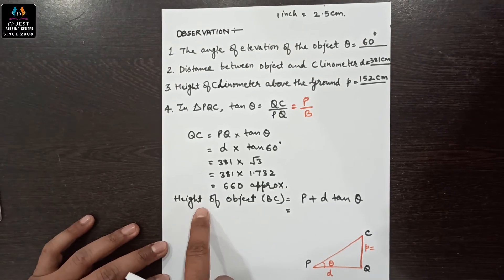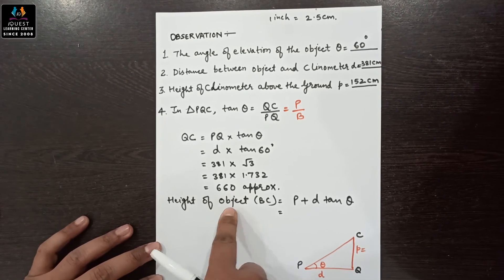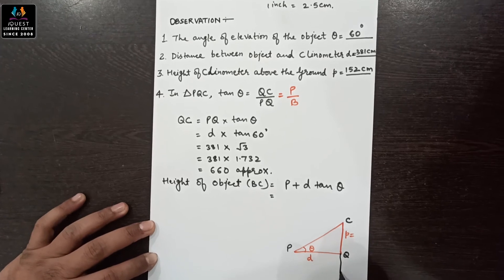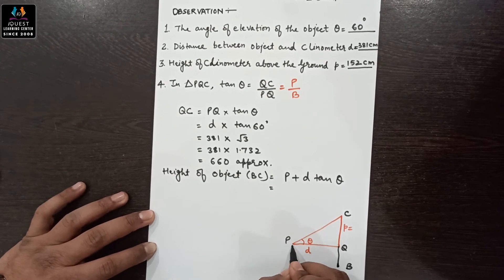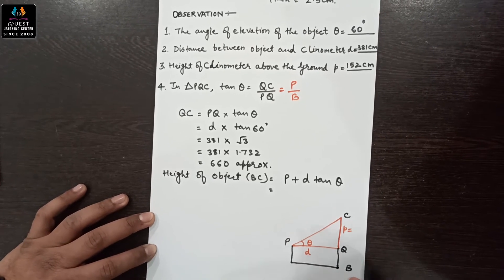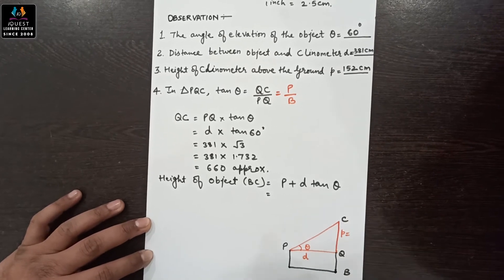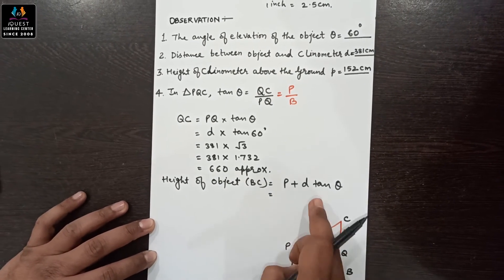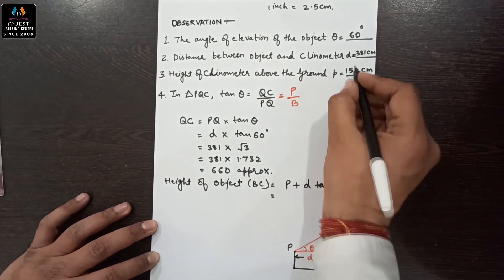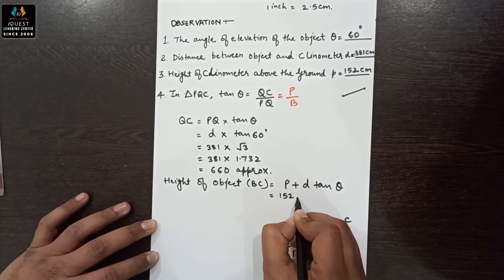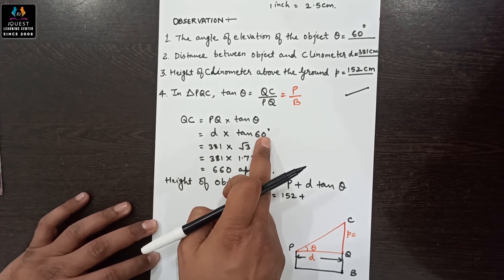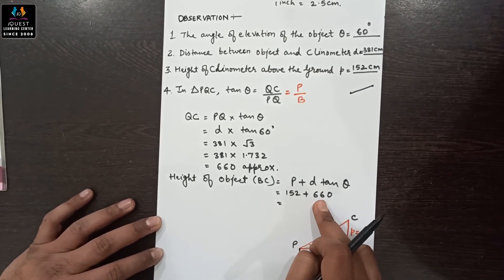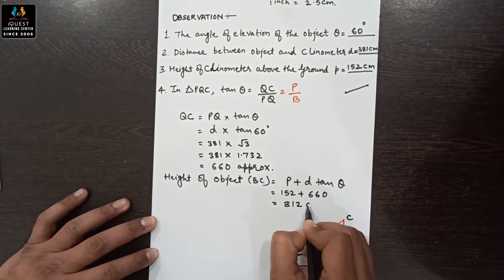Now we find the height of the object, which in our experiment is the height of the wall, represented as BC. To calculate BC, we add P plus D tan theta, where P is 152 centimeters and D tan theta is 660 centimeters. Adding 152 plus 660 centimeters gives a total height of 812 centimeters.